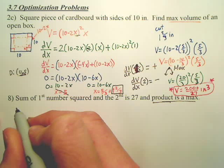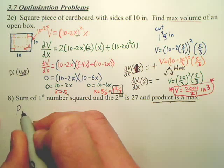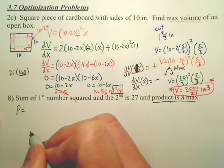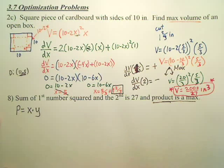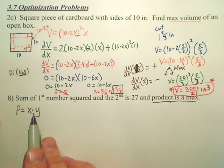So we want to, our product, let's call it P, is equal to, isn't it two numbers? Isn't product means multiply? The product equals x times y. That's my primary equation.